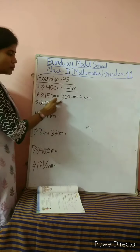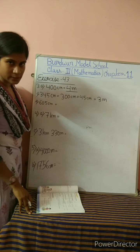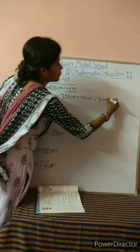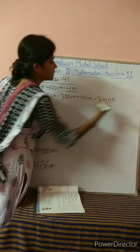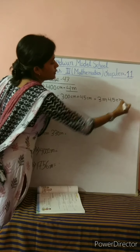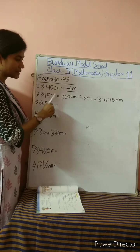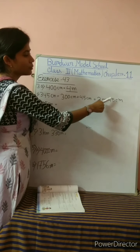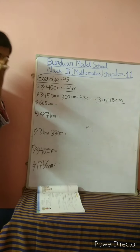See what is the relation between meter and centimeter: 1 meter equals 100 centimeters. That means 100 centimeters equals 1 meter. So 200 centimeters equals 2 meters. The same way, 400 centimeters equals 4 meters.